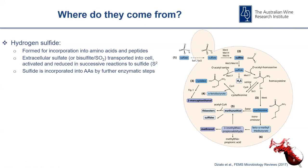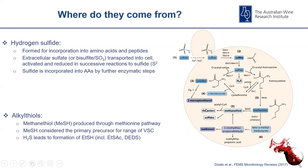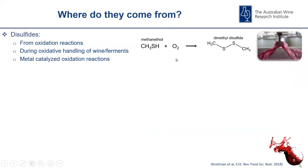If we look at the formation of alkyl thiols like methane thiol, that is formed through the methionine pathway. Methane thiol is also an important precursor to other stinky sulfurs like thioacetate, usually from a reaction with acetyl-CoA. Methionine and cysteine can also break down and produce other compounds such as 2-mercaptoethanol and methionol. Recent studies have also shown that H2S can directly lead to the formation of ethan thiol, ethyl thioacetate, and diethyl disulfide. For disulfides, their formation is usually simple oxidation reactions — they are produced during oxidative handling of wine and the ferment, and can also form through metal-catalyzed reactions.